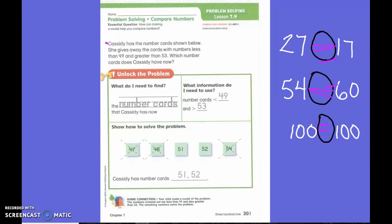Cassidy has the number cards shown below. She gives away... so what does give away mean? What are we going to do to work? It's less. So are we going to cross it out? Good, good action.